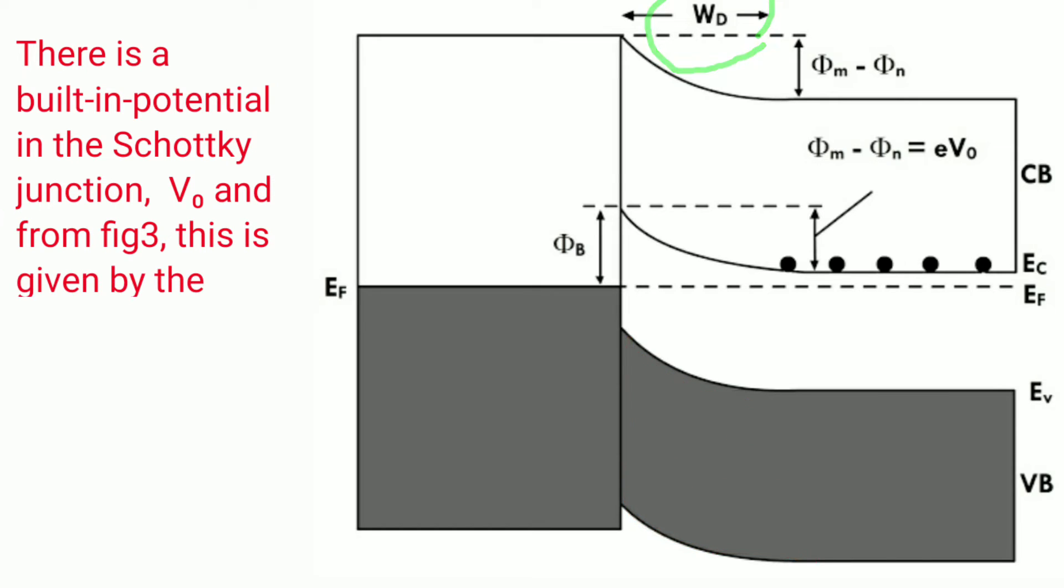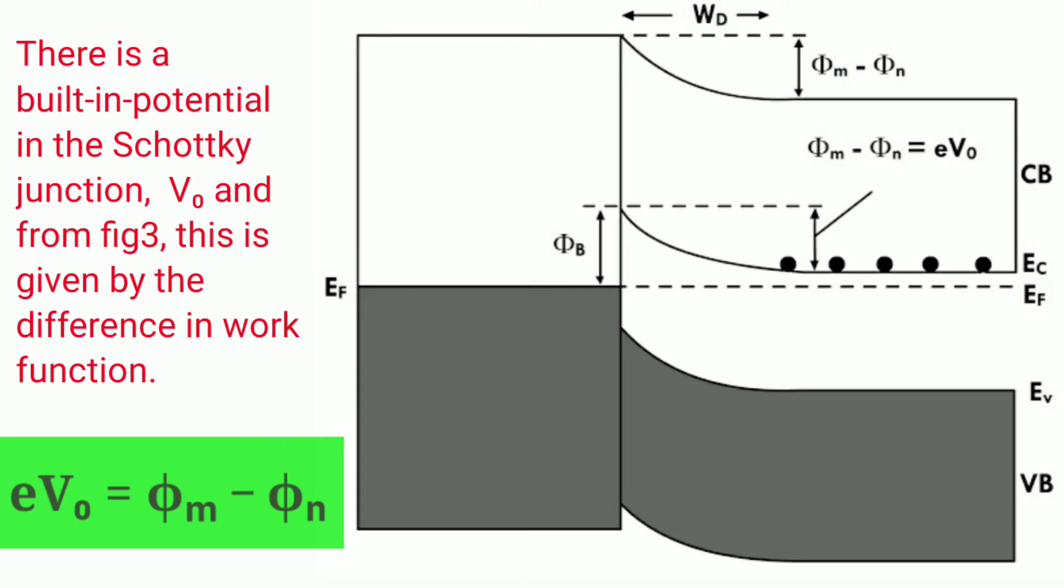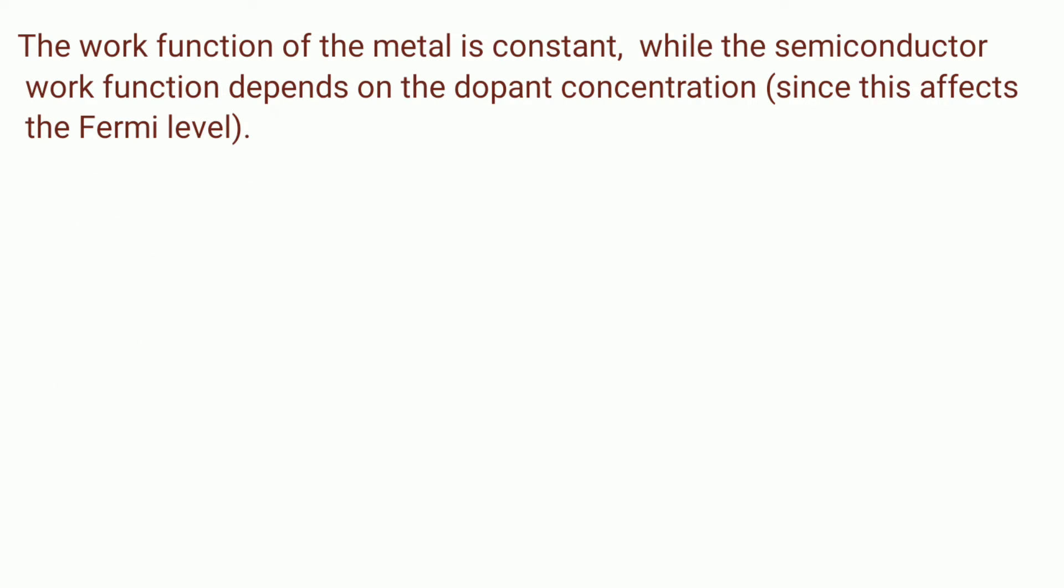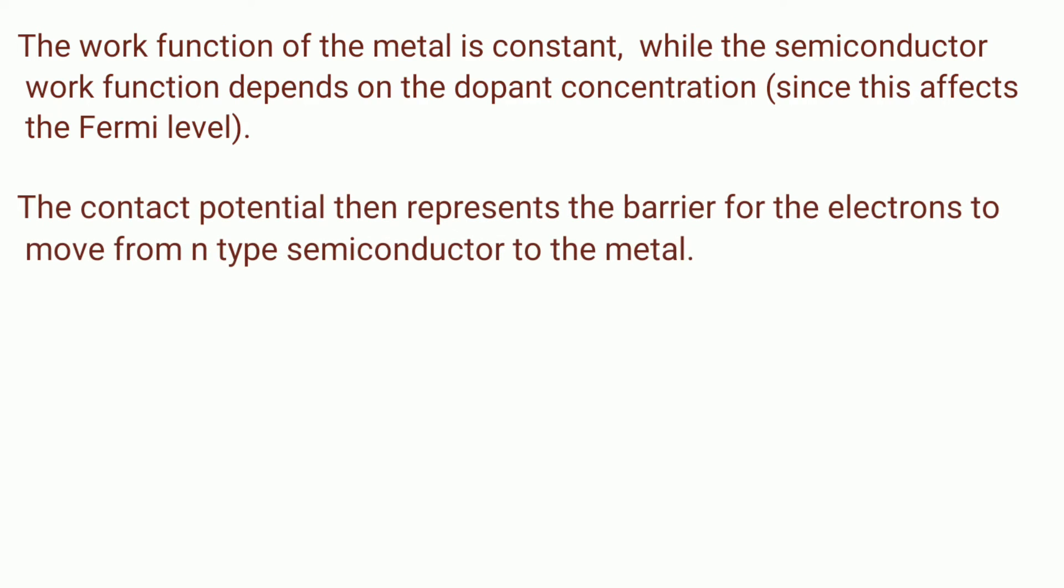There is a built-in potential in the Schottky junction represented by V0, and from this figure 3, this is given by the difference in work function. So EV0 is equal to Phi m minus Phi s. The work function of the metal is a constant while the work function of the semiconductor depends on the dopant concentration since this affects the Fermi level.